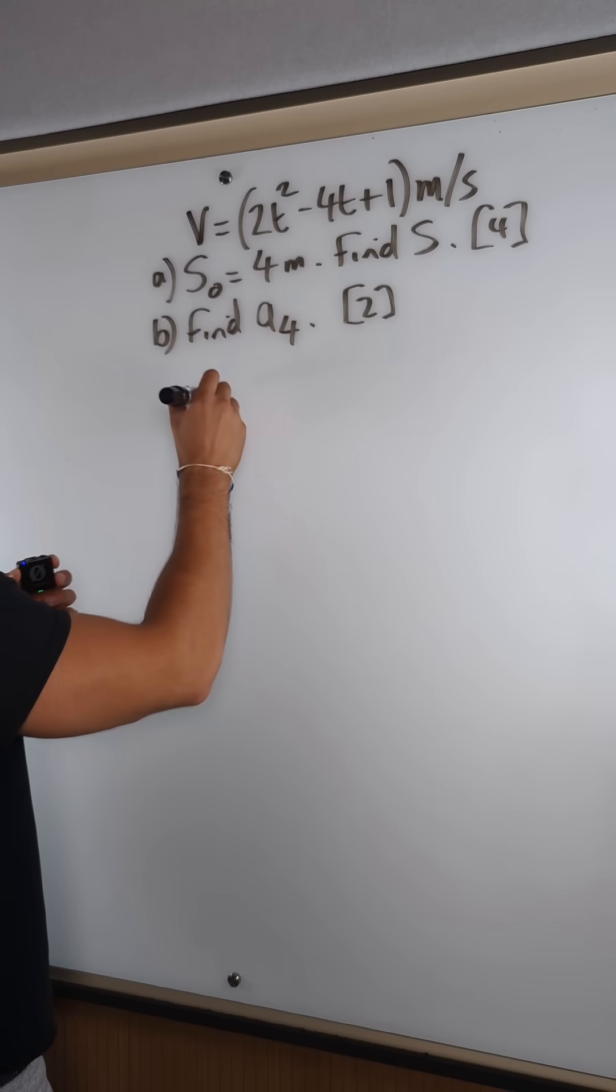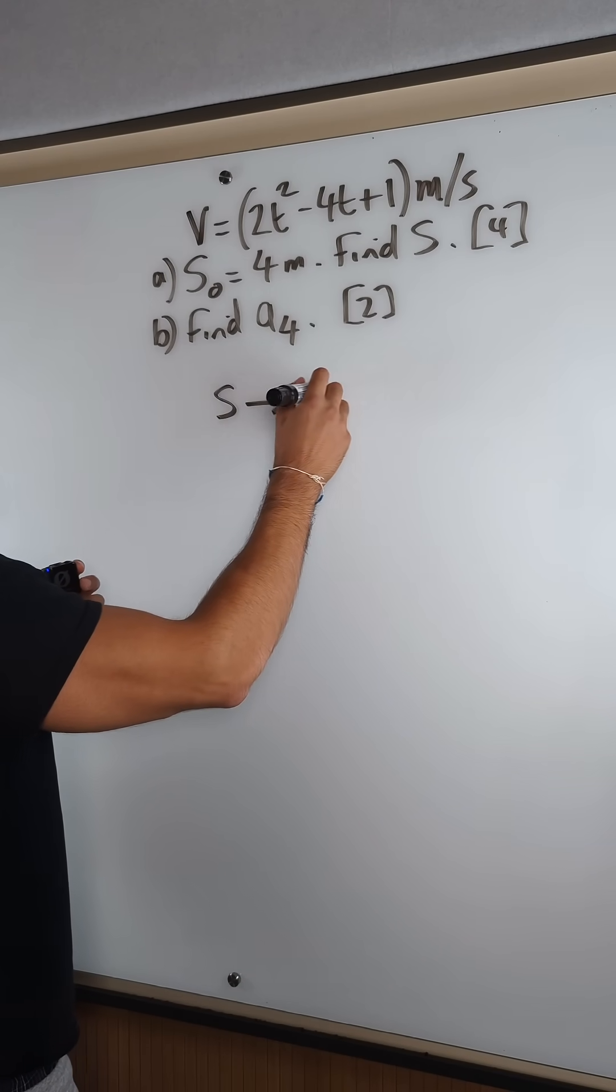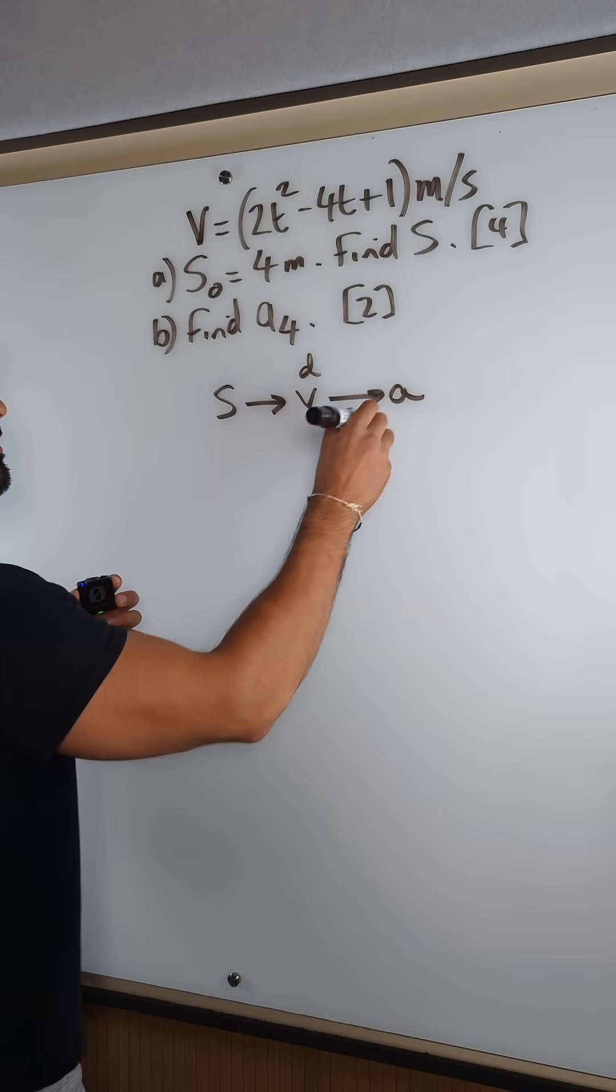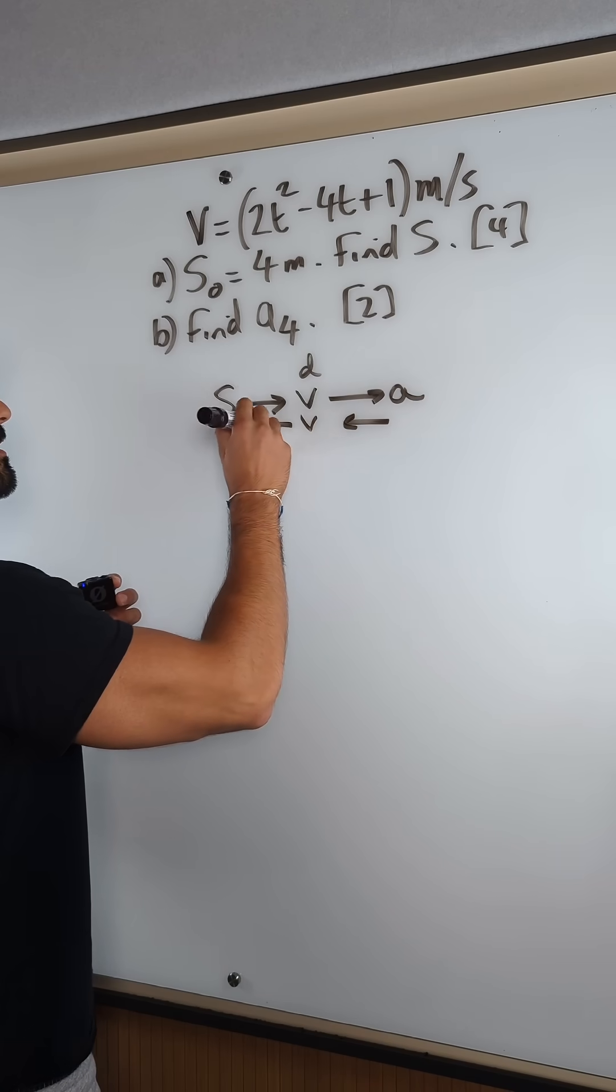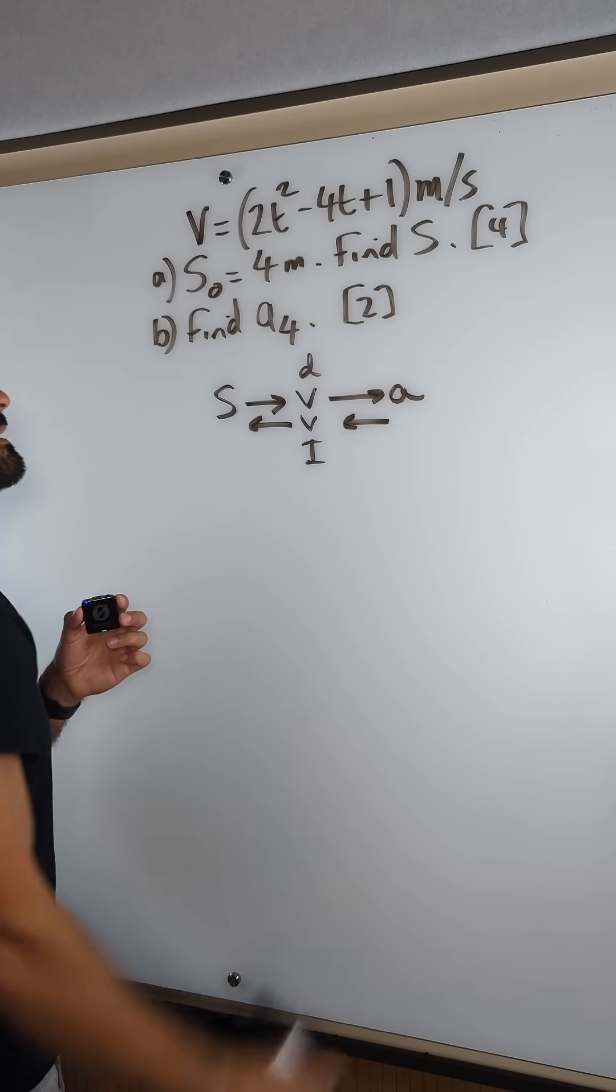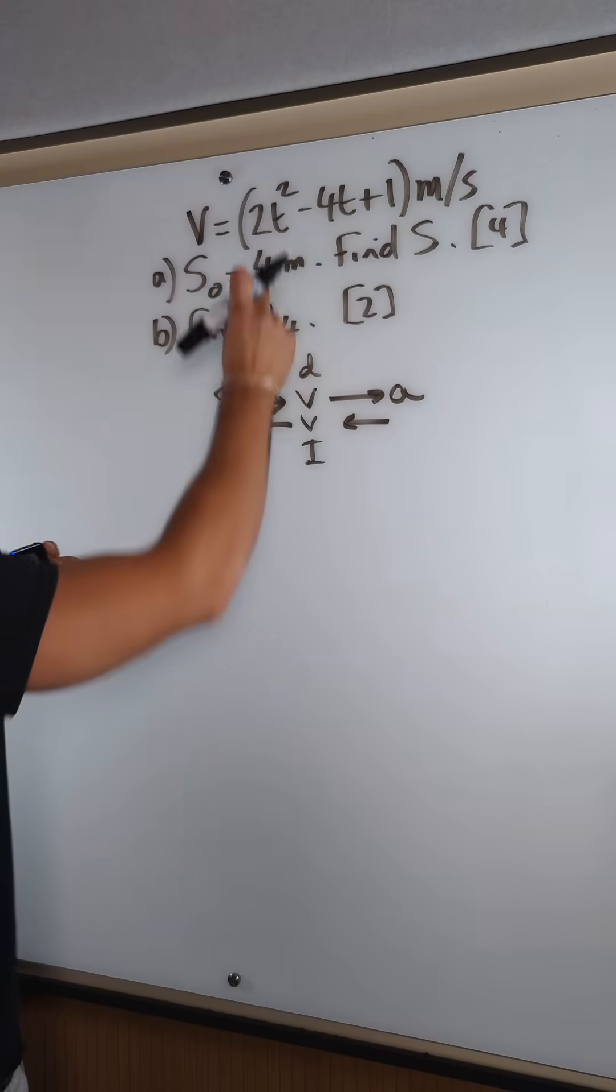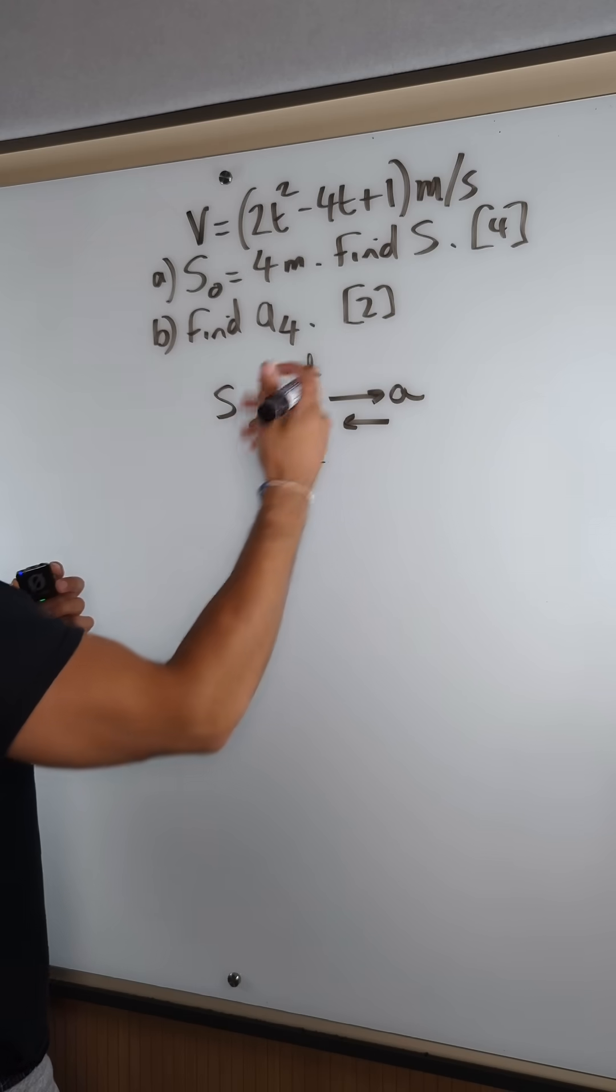So you guys need to remember this. To go from displacement to velocity to acceleration you differentiate. Then to go the other way you integrate. Makes sense. Velocity is the rate of change of displacement. That's why you're differentiating. So if I want to go from v to s I need to integrate.